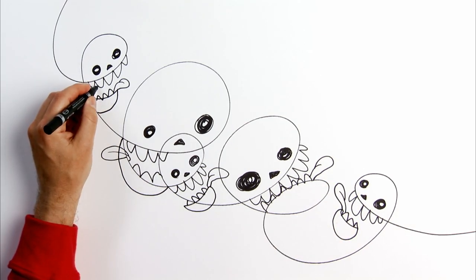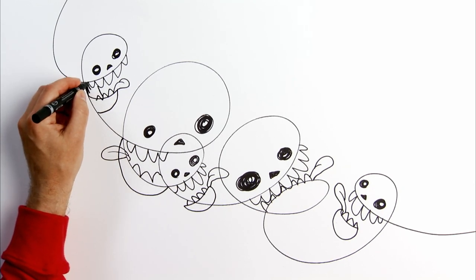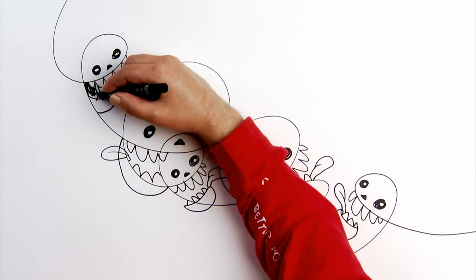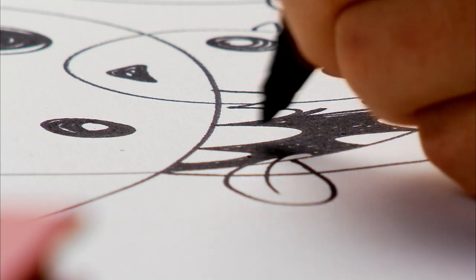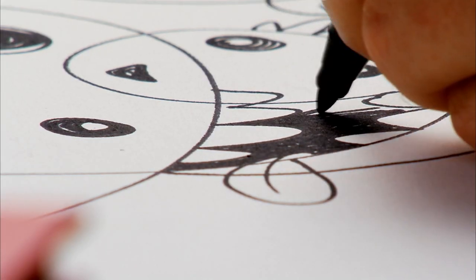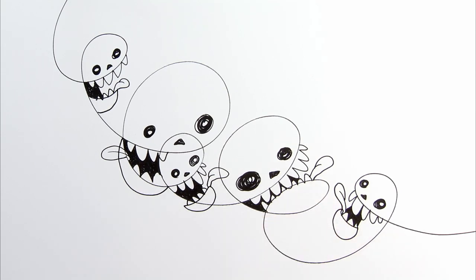Next step is to color black inside the mouths. And then the teeth look more clear and the whole thing looks more three-dimensional.